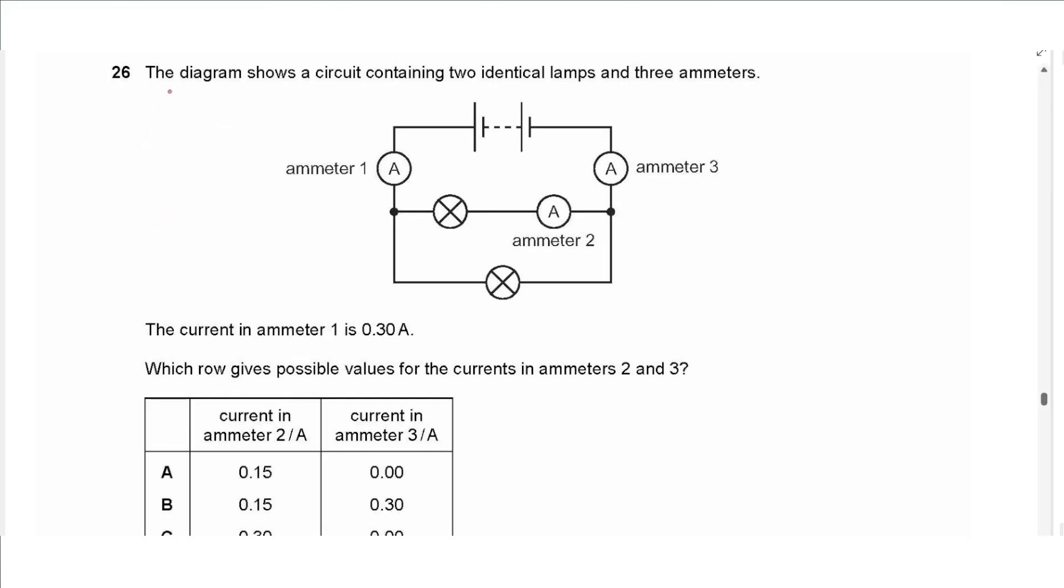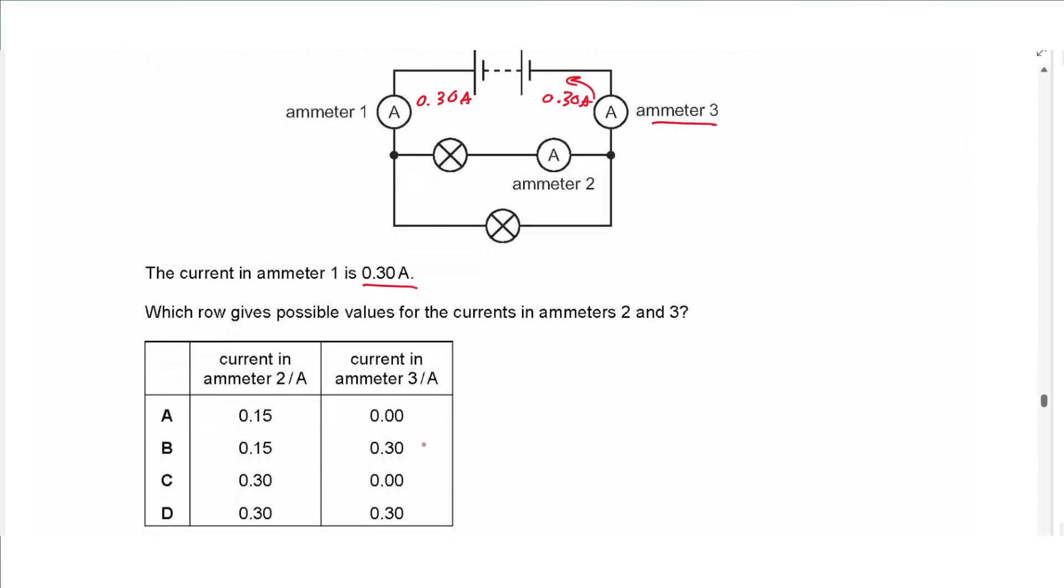Question 25 says what is the unit of electromotive force, that's voltage, so the unit is volts, so the answer is D. Question 26 says the diagram shows a circuit containing two identical lamps and three ammeters. The current in ammeter one is 0.30 amperes, so that's the current coming from the battery. So the current going to the battery will also be 0.30 amperes, that's ammeter three. So in the choices we have 0.3 here and here. Which row gives the possible values for the currents in ammeter two and three? We already did three. For ammeter two the 0.3 ampere will be divided across the two lamps, so it will be less than 0.3, so it will be 0.15. So we choose B.